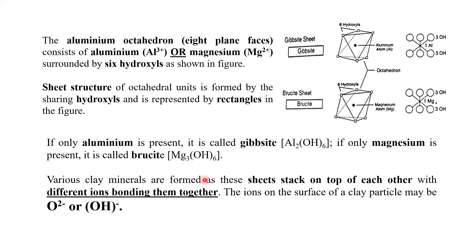Various clay minerals are formed as the sheets stack on top of each other — the silica tetrahedron sheet and aluminum octahedron sheet go together to form a stack, held with different ionic bonds. The ions on the surface of the clay particle may be O⁻ or OH⁻.